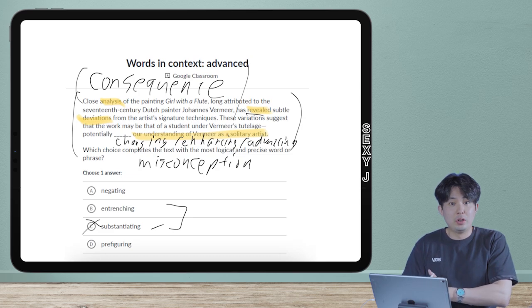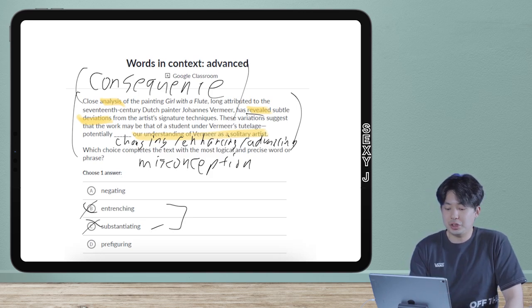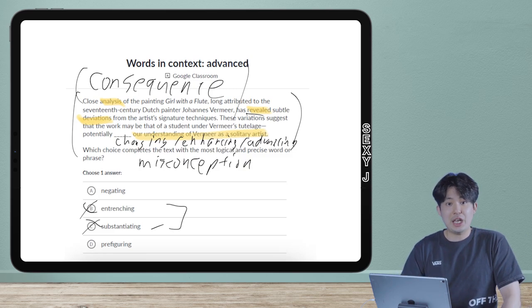I mean, I'll tell you this one right now. Entrenching literally is to dig deeper into where you are. So entrenching is the same thing as I'm going in the same direction I thought this was good, now I believe even more strongly that this is really good. So entrenching and substantiating are both going in the same direction as before.